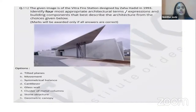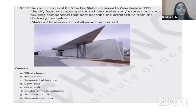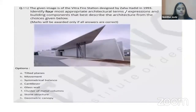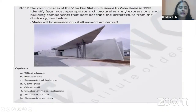Next is the Vitra Fire Station designed by Zaha Hadid in 1993. The four options that best identify its architectural features are: A (tilted planes), B (movement — there is visual movement seen in the building), D (cantilever — a large cantilever is visible at the front), and F (cluster of metal columns — visible on screen, with a horizontal cantilevered member at an angle on top).